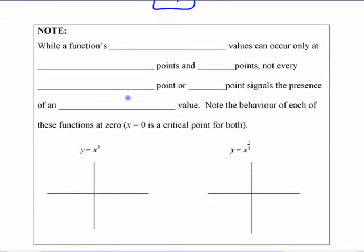Well, a function, so this is kind of a summary, I guess. I like making fill in the blanks where I've made them all blanks and they could mean anything, right? But well, a function's extreme values can occur only at critical points and end points.